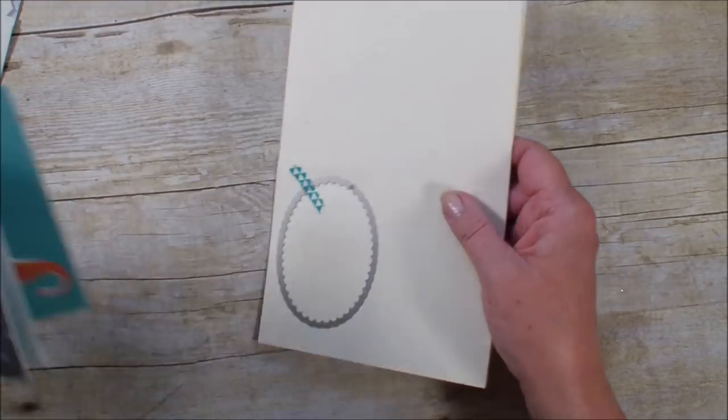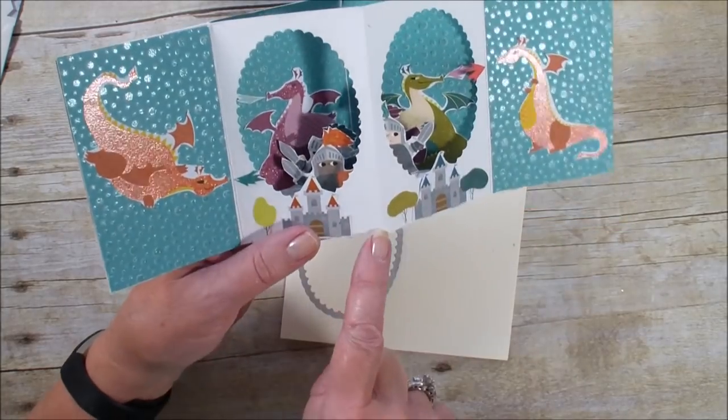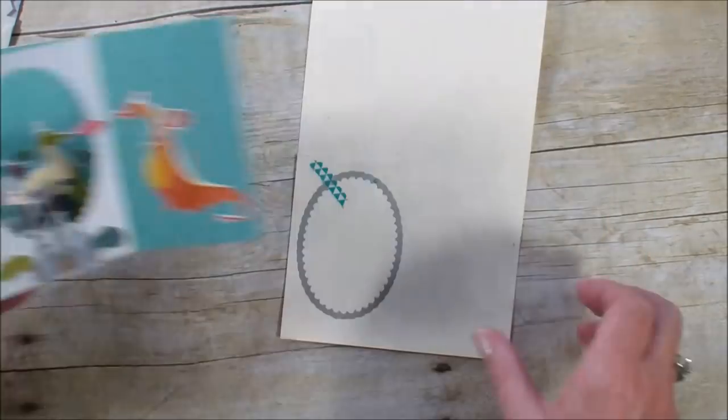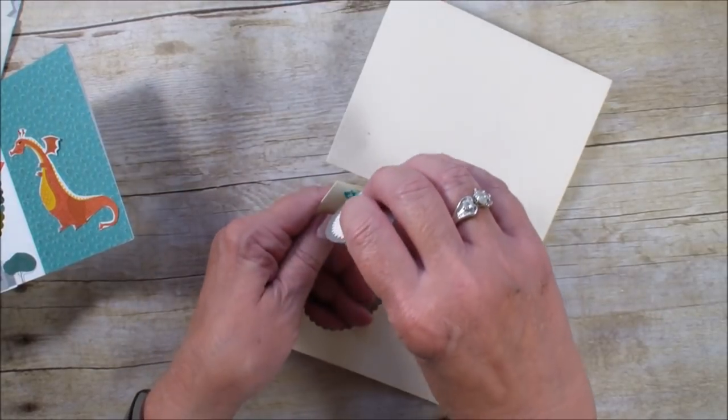But let's bring that in. And I'm going to show you that Denise, on this one, she did not. She left, she used the Whisper White, and so she cut that oval out. So we've got this.